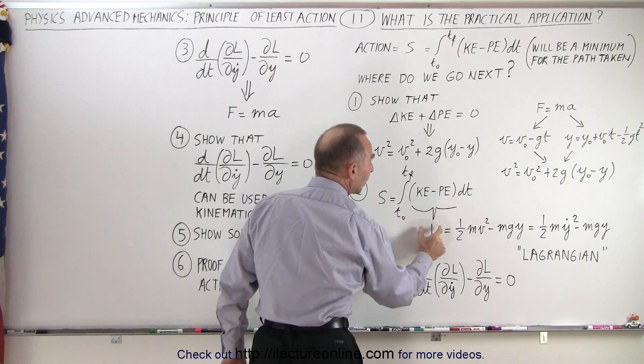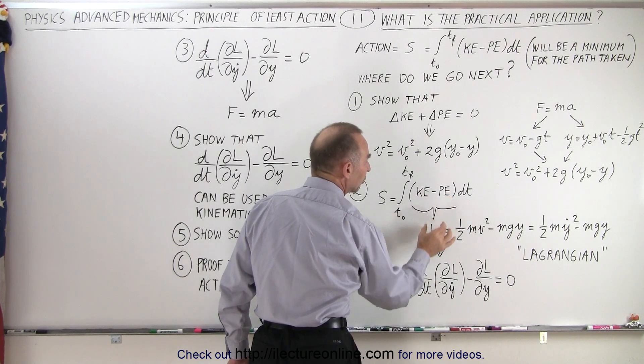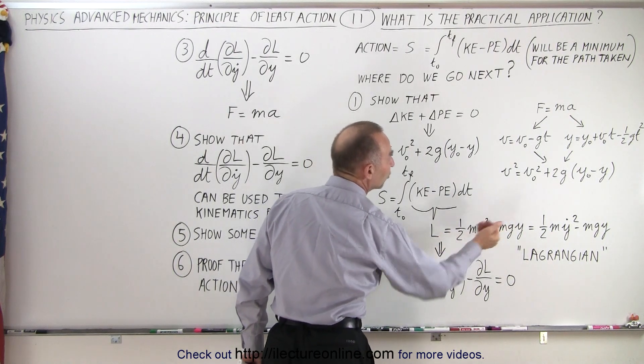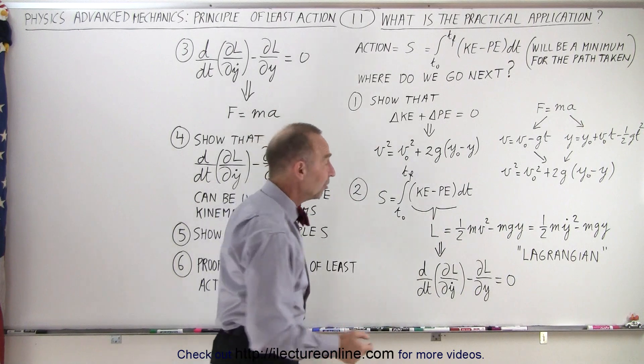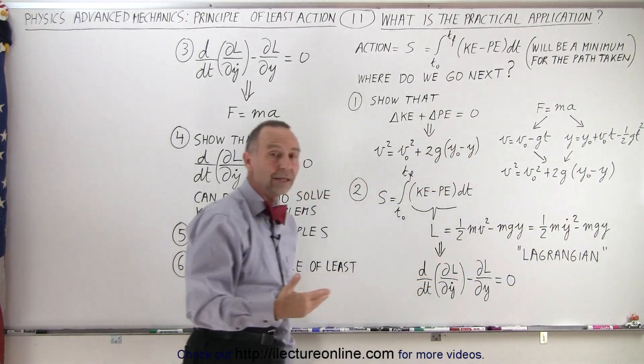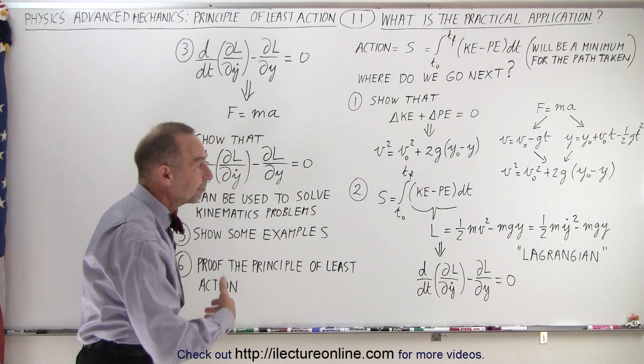can be expressed in terms of what we call the Lagrangian. We're going to set this equal to the Lagrangian, which essentially is one-half m v squared minus mgy. And then, instead of writing v, we can write y dot. y dot is basically the velocity in a different format, written in terms of dy/dt.